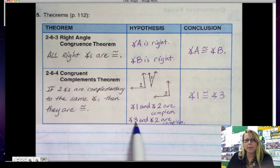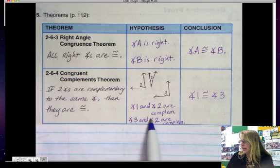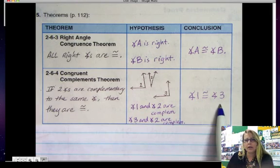then what we know for a fact is that angle 1 has to be congruent to angle 3 because angle 1 and 3 are complementary to the same angle 2. Therefore, 1 and 3 are congruent to each other.